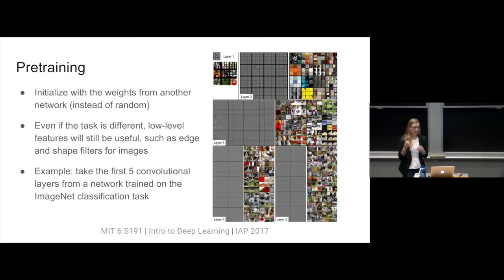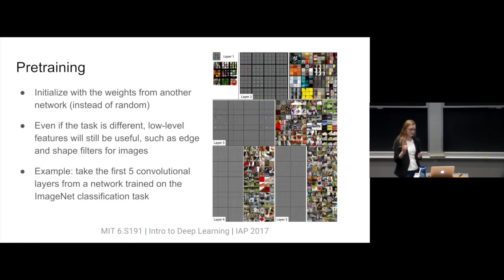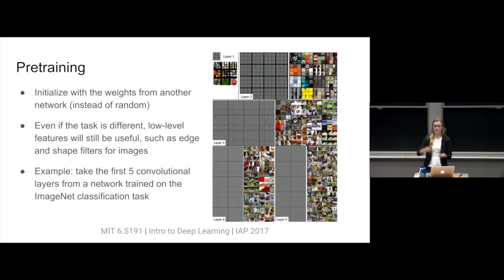Pre-training is simply initializing the weights from another network that we've trained previously. Normally when training a neural network, you might initialize them randomly by sampling from a Gaussian. But we can pre-train using, say, a network trained on ImageNet classification, which learns a lot of useful features about images — edge filters, color filters, and all the way up to layer five, where it's learning higher-level visual stimuli such as different objects, circles, and corners. We can reuse a lot of these weights for different vision tasks, even if it's not exactly the same as ImageNet.